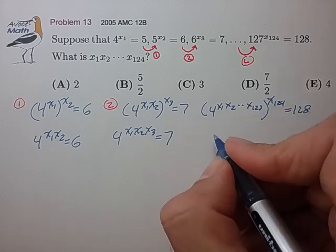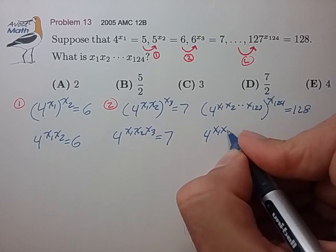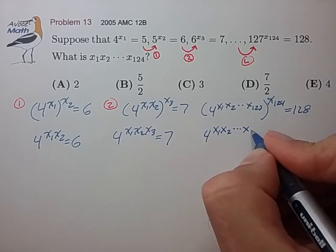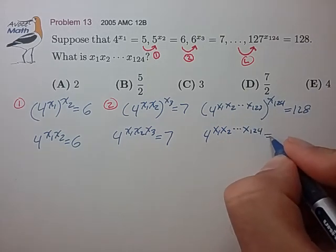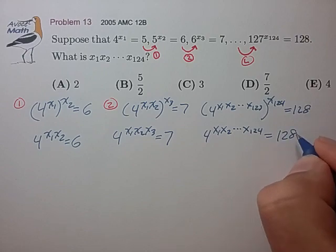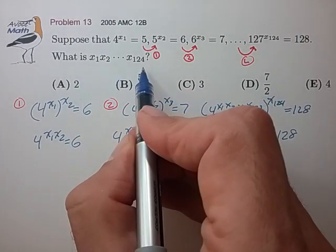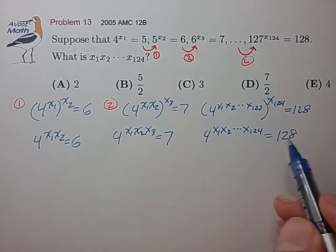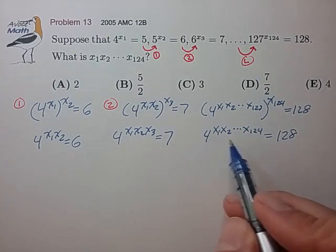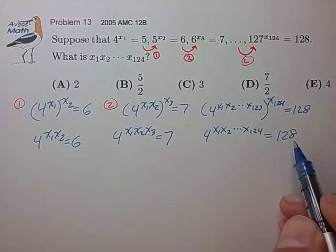Again, using the product rule, we find this equals 4 to the x1 x2 through x124 equals 128. All right, it seems like we're pretty close here. We've formed this product that we're trying to search for. So we have 4 and 128, both of which are powers of the base exponent 2.